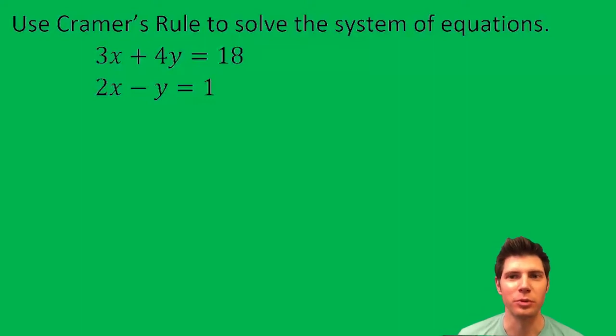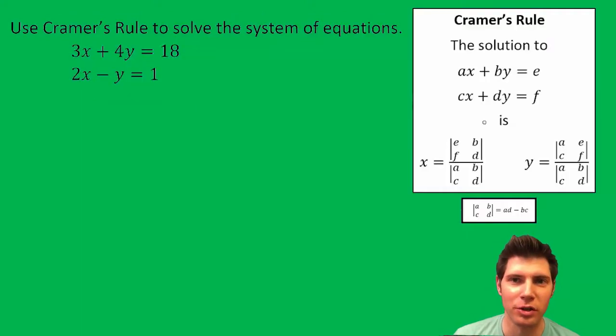Hey guys, welcome to this Cramer's Rule problem. So these are the notes for Cramer's Rule. This is A right here, B, C, D, E, and this is F.